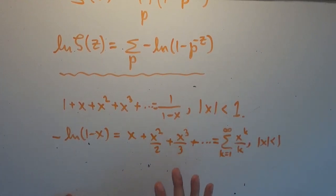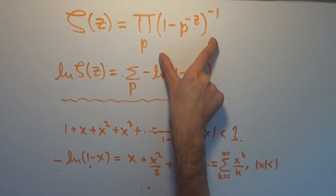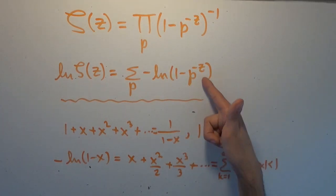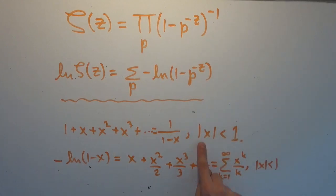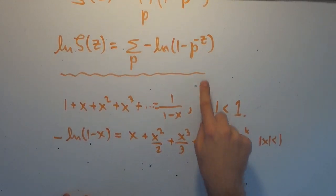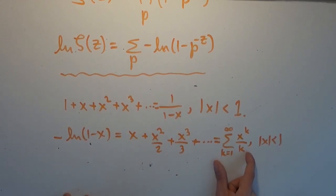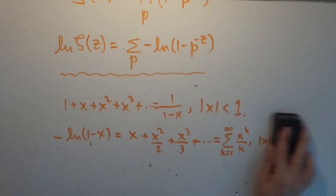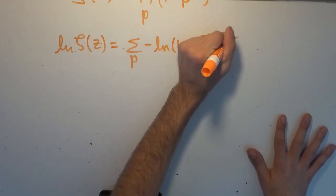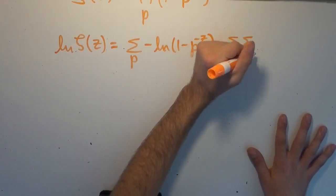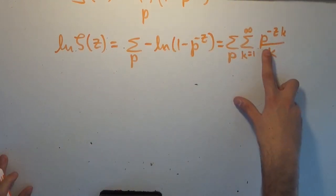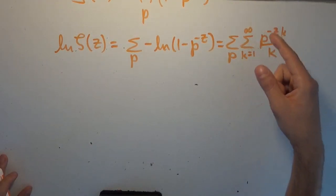This still has to hold for x with absolute value less than 1. But we know that because this definition is only defined for z with real part greater than 1, the magnitude of z has to be more than 1, which means that 1 over prime numbers to a power with magnitude larger than 1 is always going to be less than 1 in absolute value. Which means it's totally valid to plug a prime number to the power of negative z into this equation, and simply use this representation of negative log of 1 minus x as an infinite sum.